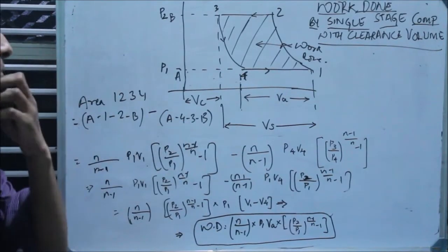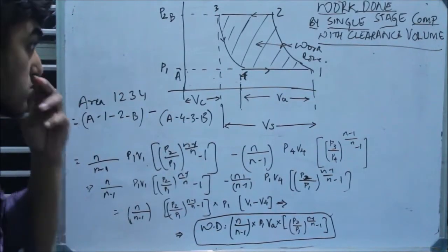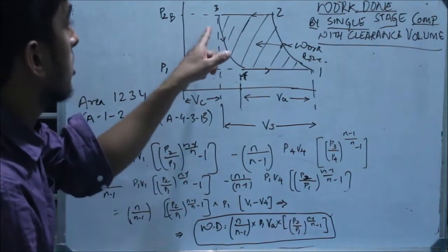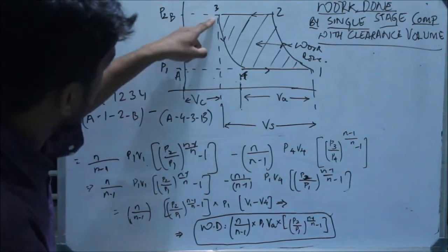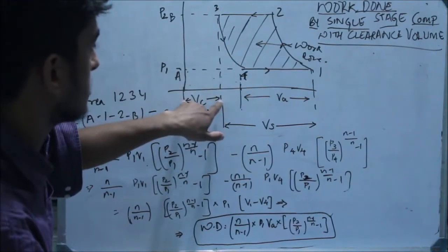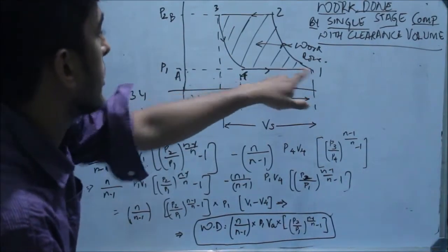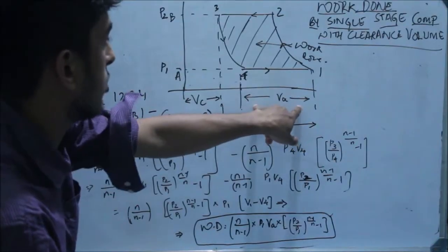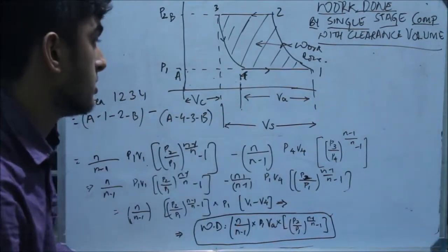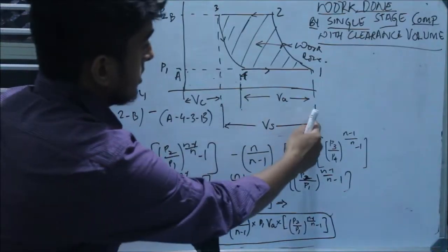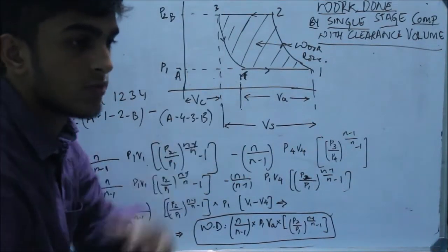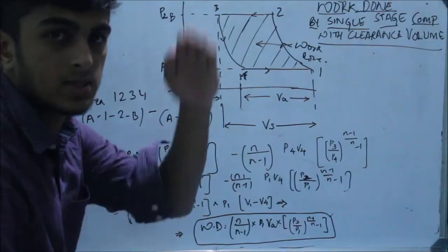So, A12B minus A43B. There are a few points we need to remember in this graph. Vc or V3 is the clearance volume. V1 minus V4 is the actual volume — that is the actual volume of air that is sucked in by the compressor. And V1 to V3 is the swept volume — that is the volume swept by the piston inside the cylinder.